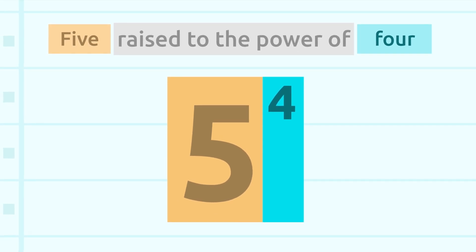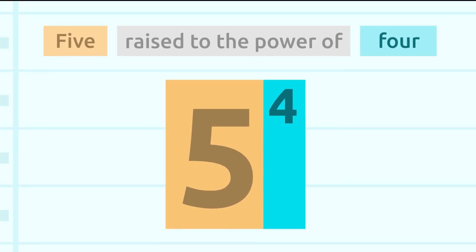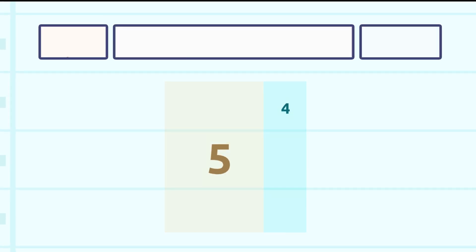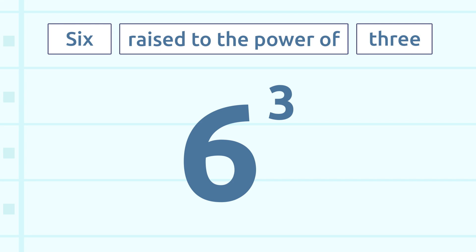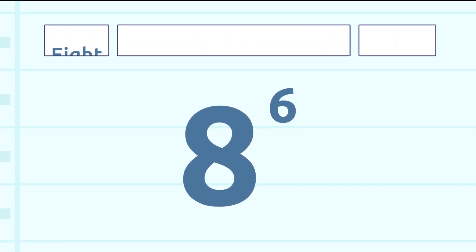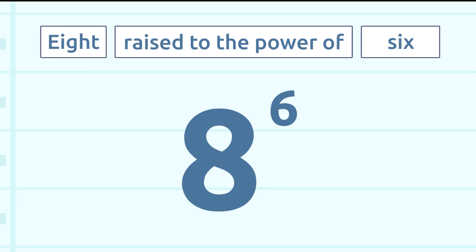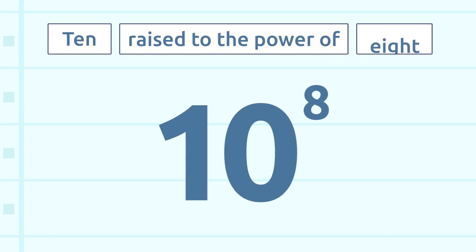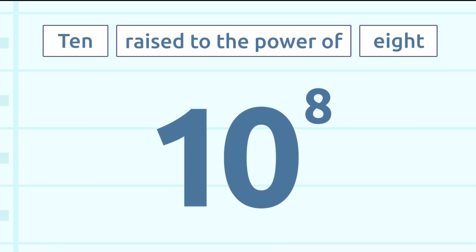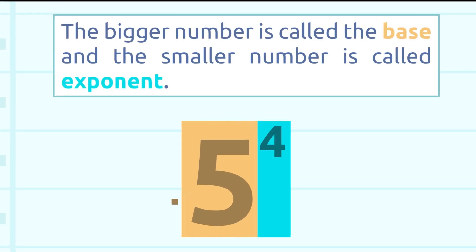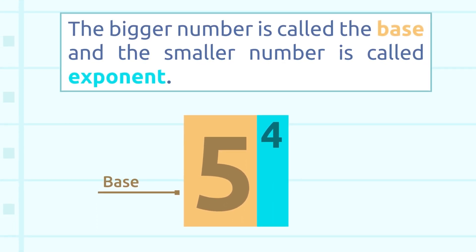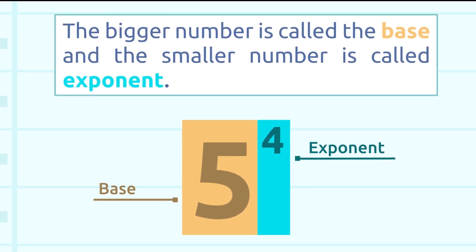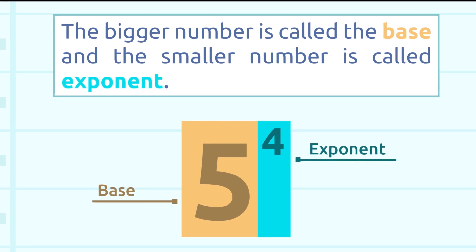How would you read this power? Six raised to the power of three. Well done! And this one? Eight raised to the power of six. How about this one? Ten raised to the power of eight. The bigger number is called the base. The smaller number is called the exponent.